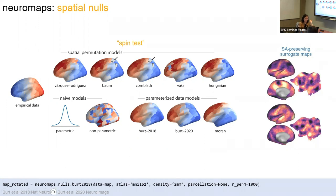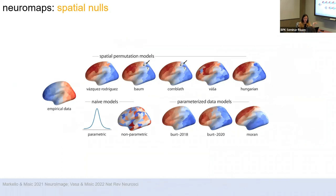The spin test is purely geometric — it just takes the surface and spins it. The generative version is based on your data and tries to estimate new data with a similar spatial autocorrelation. The code requires you to provide your data, the space it's in, whether there's a parcellation, and how many permutations you want. There are several named versions — named after who first introduced them, except for 'Hungarian,' which relates to something Eastern European but I'm not entirely sure what.